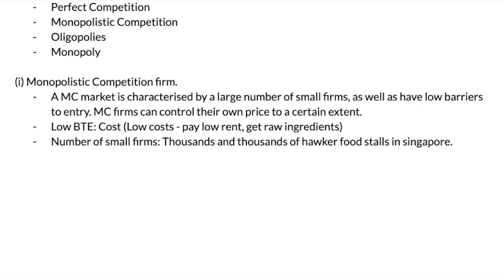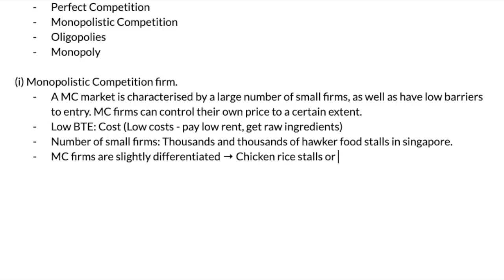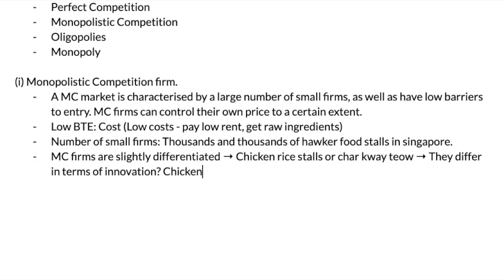MC firms are slightly differentiated. For example, chicken rice stalls or Char Kway Teow — they differ in terms of innovation. Some firms produce chicken rice balls, or produce different versions of rice; maybe some stores offer brown rice, some offer white rice, or some other variety. So as a result, this is how you can tell that a hawker store is actually an MC firm.